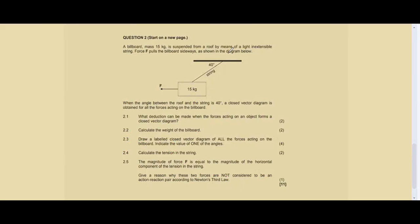We have question two on vectors in 2D. It says a billboard of mass 15 kg is suspended from a roof by means of a light inextensible string. Force F pulls the billboard sideways as shown in the diagram below. When the angle between the roof and the string is 40 degrees, a closed vector diagram is obtained for all the forces acting on the billboard.